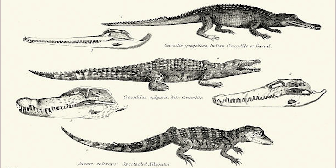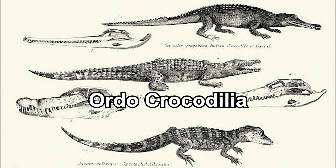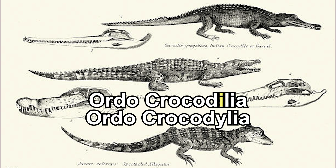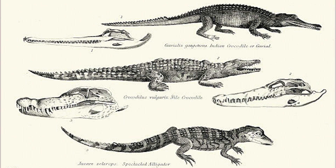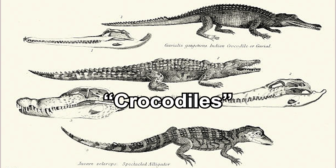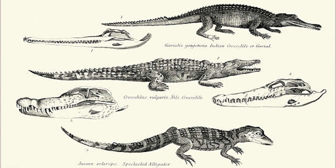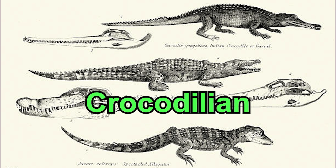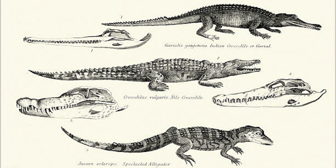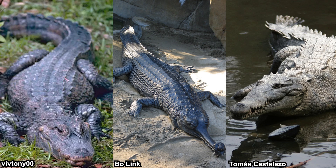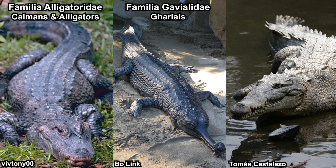All currently extant crocodiles are classified in the order Crocodilia. Some authors write the taxon name with an 'i,' some write it with a 'y,' and for now let's assume both are valid. While many people call members of this order simply 'crocodiles,' an effort to be more precise led to the term 'crocodilian.' The extant crocodilians are divided into three families: Alligatoridae (the alligators), Gavialidae (the gharials), and Crocodylidae (the crocodiles).